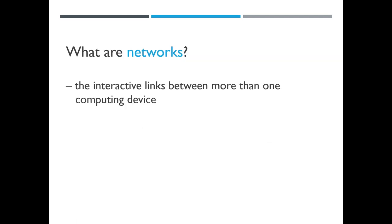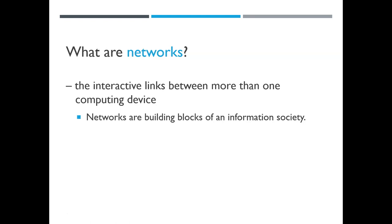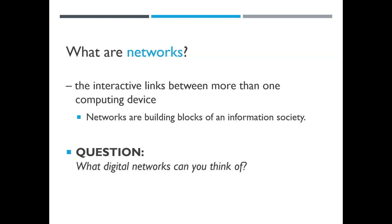Networks are interactive links between multiple computing devices — the building blocks of an information society. If a computer is just sitting by itself, not plugged into the internet, it's sort of a useful typewriter. You'd have to bring it hard disks or jump drives to move information. A network makes the transfer of data fast and easy. Without a network, you can't really have an information society. What digital networks can you think of? There are multiple ones.